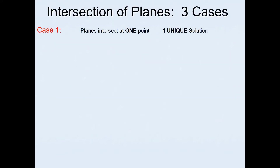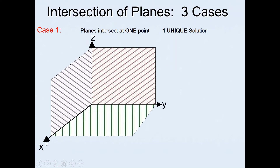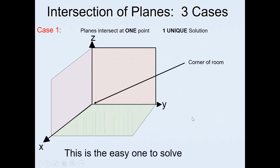Looking at these scenarios in terms of how the planes intersect: in Case 1, the planes intersect at one point leading to one unique solution. If we have the planes x, y, and z, you can see they intersect at a corner — like the corner of a room — and this common intersection leads to one unique solution that is easy to solve.